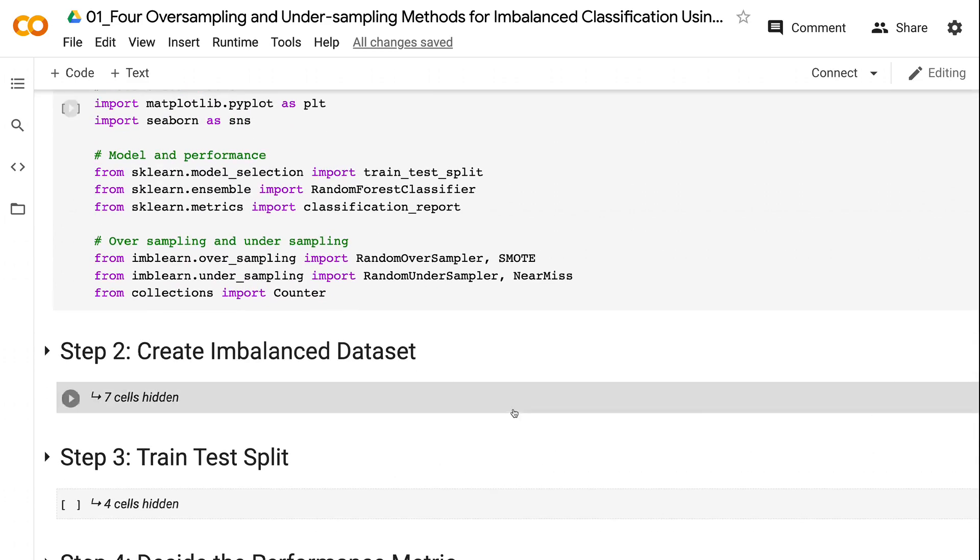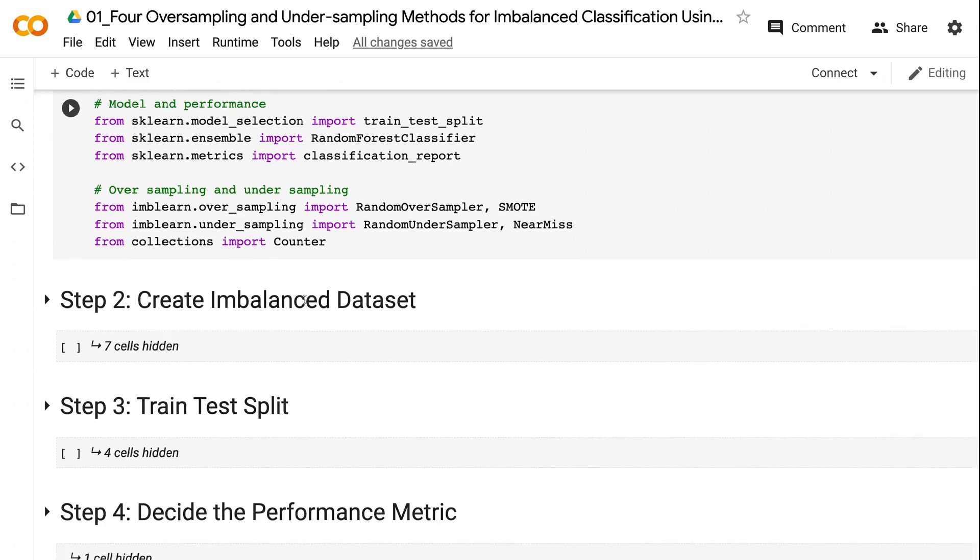For the oversampling and undersampling, we need to import random oversampler, SMOTE, random undersampler, and near miss. Counter will help us count the number of records after oversampling and undersampling.